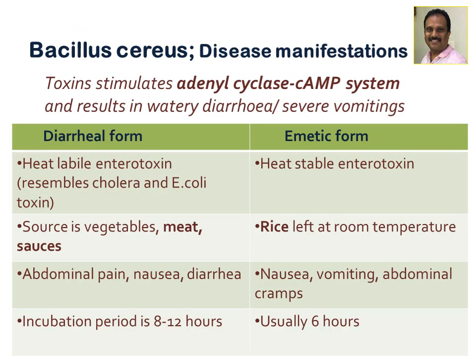Bacillus cereus produces a heat-stable enterotoxin responsible for the emetic form of gastroenteritis, and a heat-labile enterotoxin responsible for the diarrheal form of gastroenteritis. The toxin stimulates adenylyl cyclase and the cyclic AMP system, resulting in watery diarrhea with or without severe vomiting.